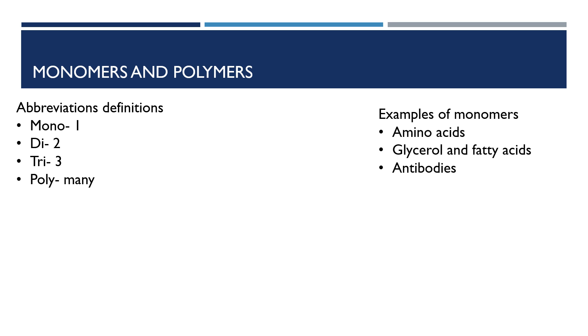What are examples of monomers? Examples of monomers are amino acids, glycerol and fatty acids, and antibodies.